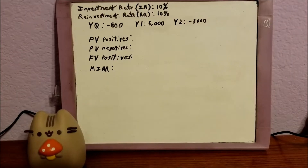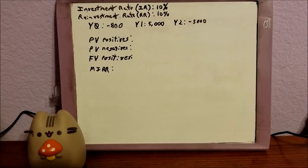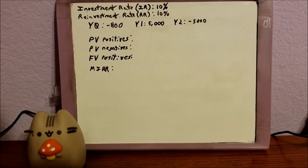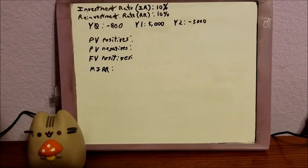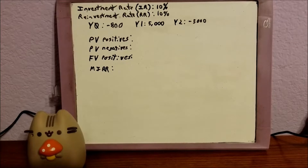Hi everybody, welcome back. Today we're going to be taking a look at calculating the MIRR, or the Modified Internal Rate of Return, using the TI-84 calculator.